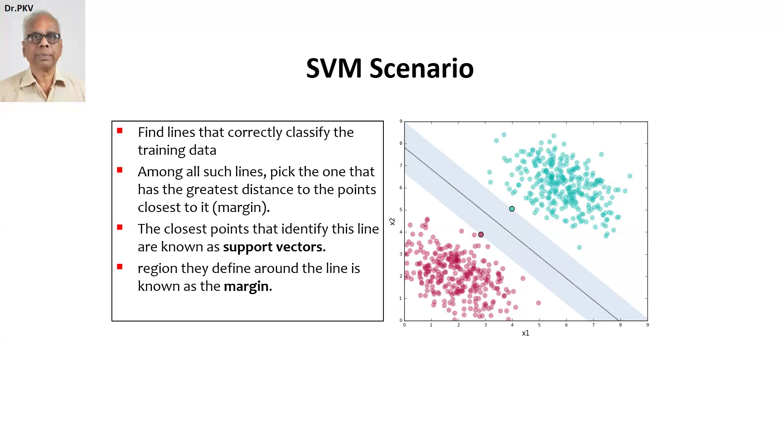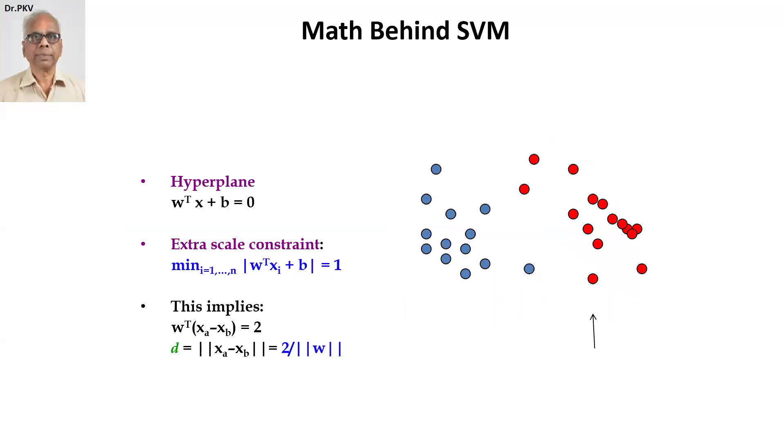So some maths behind that, let's look at it. Similarly, as all of you know, the hyperplane is given in the vector form W transpose X plus B is equal to 0. And primarily hyperplane means more than two dimensions and we have to give the constraint that the distance margin is made the largest.